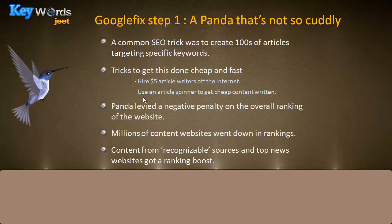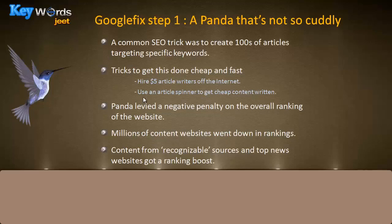It was not a good time to be an internet user or a search engine, because at both ends you were being gamed by unethical website owners. Panda levied a negative penalty on the overall ranking of websites identified as using these practices. For this, Google created a special algorithm based on research and manual work by people identifying bad-quality articles and spotting common trends. Google could then predict if an article was repetitive or badly written. When Panda was activated, millions of websites dropped in rankings because of poor or repetitive content.